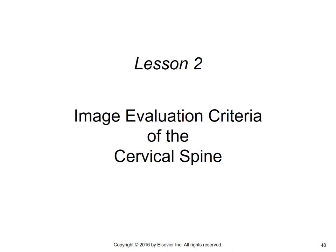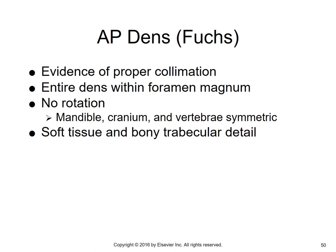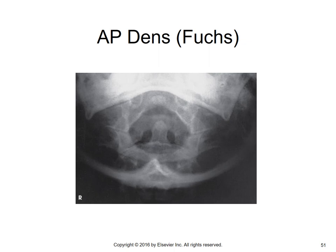For image evaluation criteria of the Fuchs method: evidence of proper collimation, the entire dens is within the foramen magnum — this is very important for registry exam questions. The foramen magnum is the large opening at the base of the skull through which the spinal cord exits the brain. There is no rotation; the mandible, cranium, and vertebrae are symmetric. Soft tissue and bony trabecular detail are seen. On a good Fuchs image, you can see a darkened circle representing the foramen magnum with the tip of the odontoid coming up into it.